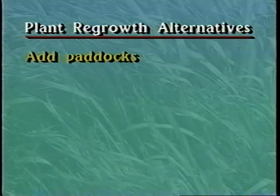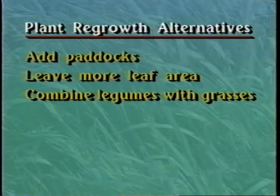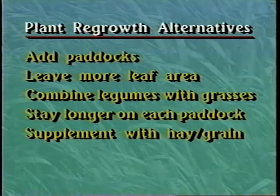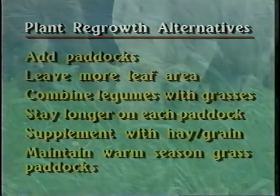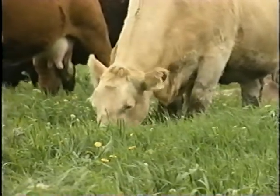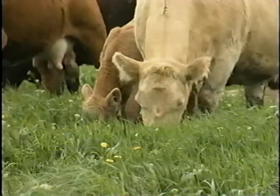A number of alternatives exist to provide for longer rest periods and slower regrowth rates. These alternatives include adding additional paddocks, leaving more leaf area following grazing to provide more rapid regrowth, maintaining some legumes with the cool season grasses, staying longer on each paddock, supplementing livestock diets with hay or grain, and maintaining some warm season grass paddocks strictly for summer grazing. Fresh forage is at the heart of a successful managed grazing system. Mastering the management skills necessary to keep that forage vigorous and high quality is the key to a profitable pasture livestock enterprise.